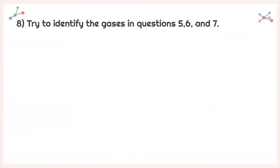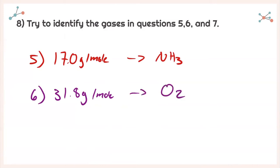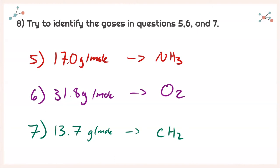For number 8, it says: try to identify the gases in questions 5, 6, and 7. For question 5, we got a molecular mass of 17.0 grams per mole — the first thing that comes to mind is ammonia, NH3, which has a molar mass of 17. For question 6, we got 31.8 grams per mole — closest to oxygen gas, O2, with a molar mass of 32. For question 7, we got 13.7 grams per mole — the easiest answer is CH2, which gives a molar mass of about 14.